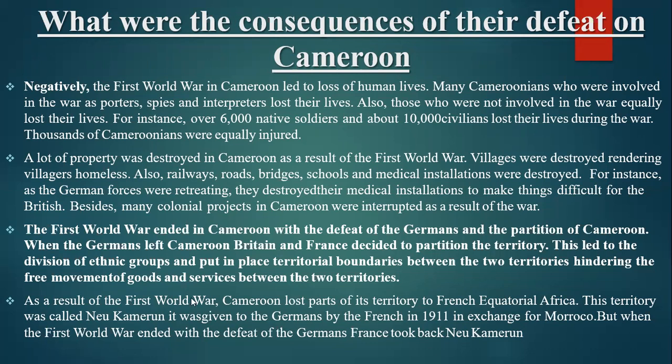A lot of property was destroyed in Cameroon as a result of the First World War. Villages were destroyed, rendering villagers homeless. Railways, roads, bridges, schools, and medical installations were destroyed. For instance, as the German forces were retreating, they destroyed their medical installations to make things difficult for the British. Besides, many colonial projects in Cameroon were interrupted as a result of the war.